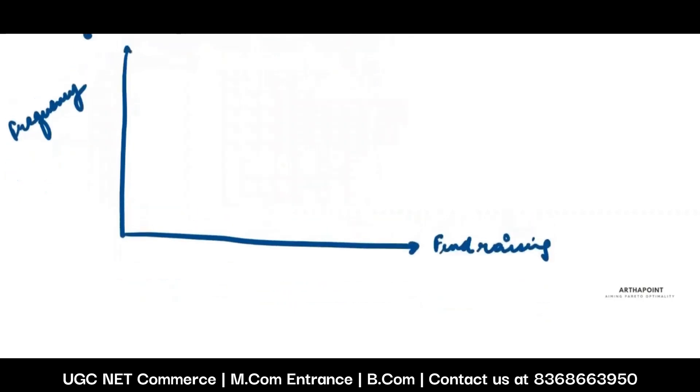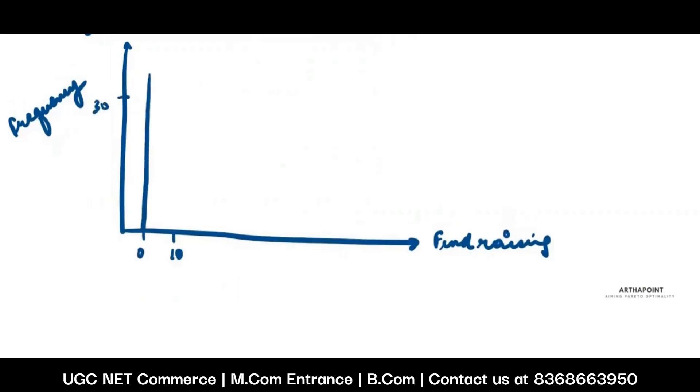But suppose I give you a table or a graph like this, where I make fundraising here and the frequency here. I will tell you that the amount of funds raised between 0 to 10 have a frequency of more than 30 - more than 30% of the total population or more than 30 people give a charity of 0 to 10. Between 10 to 20, it is maybe 20. Between 20 to 30, if I take 10 here, it is very less, maybe somewhere over here. Between 30 to 40, maybe around 5.